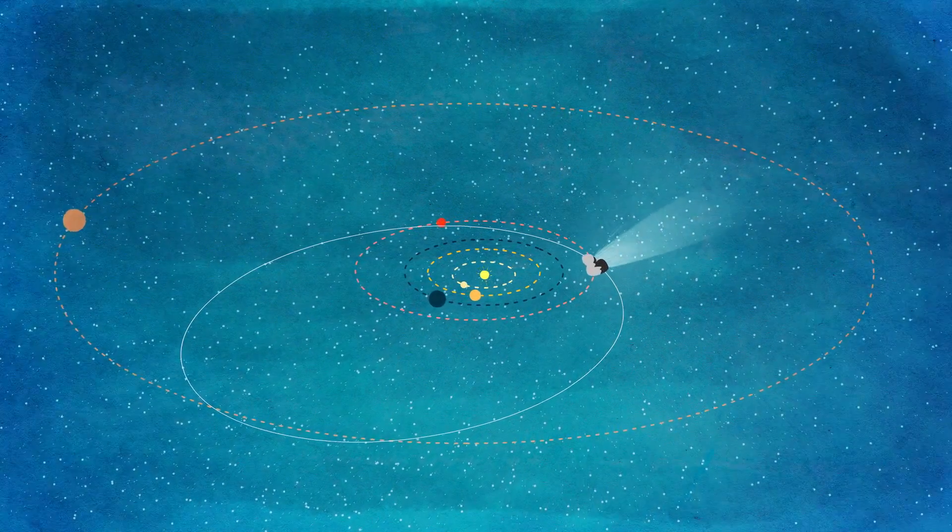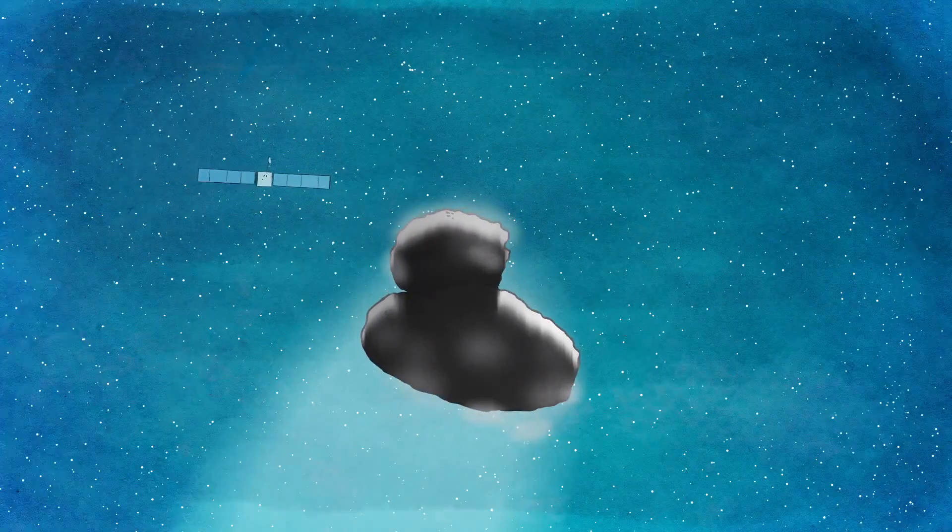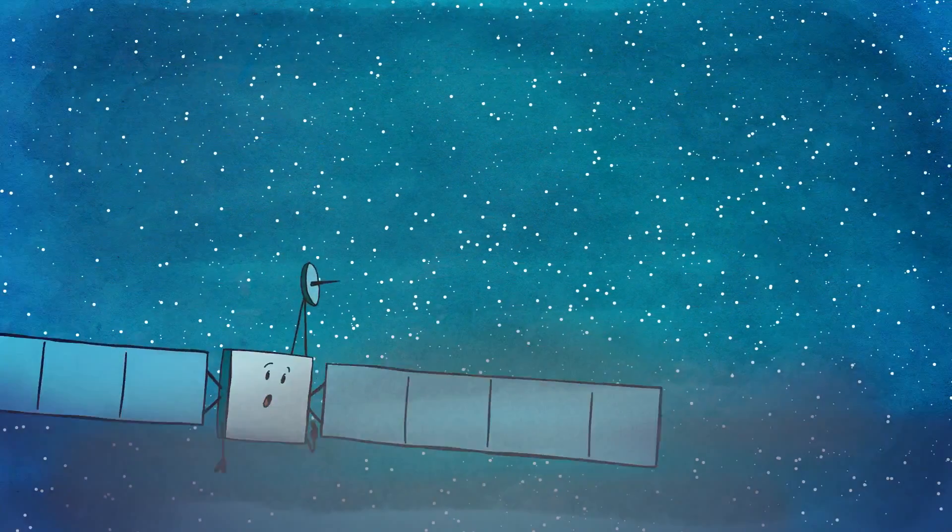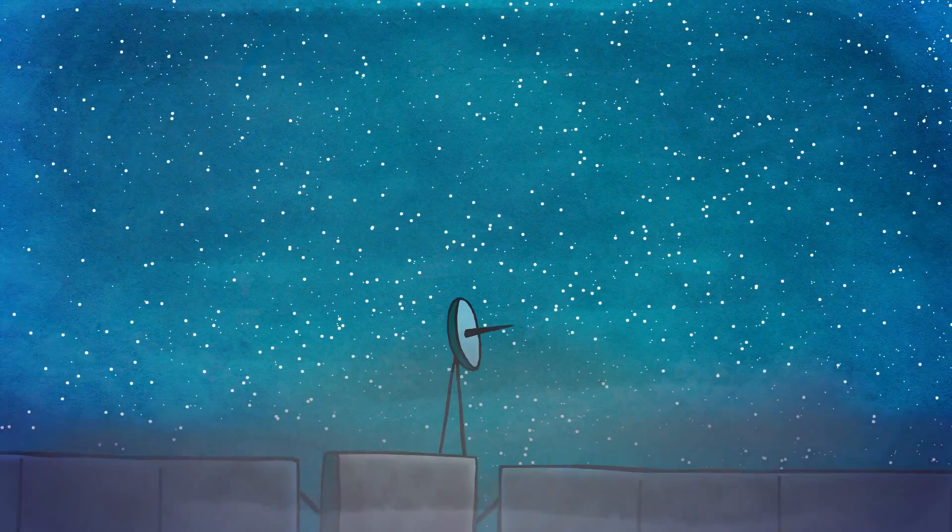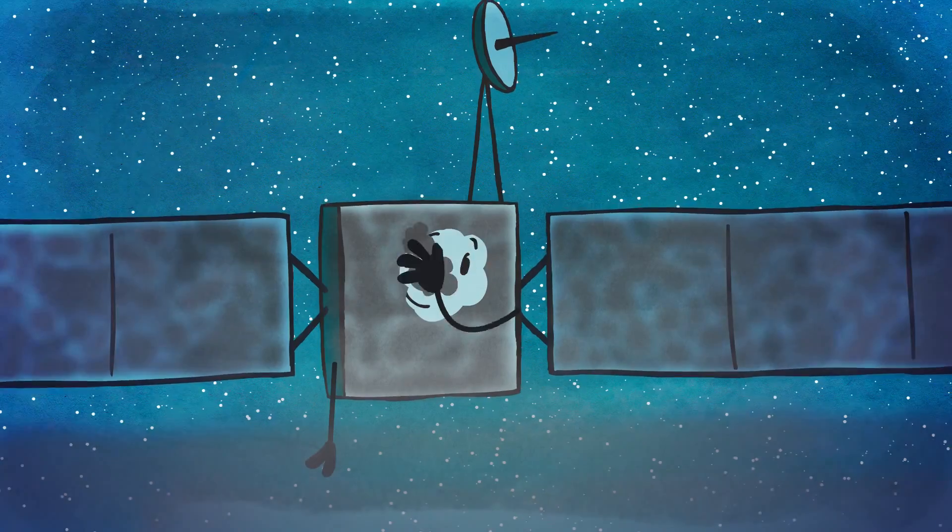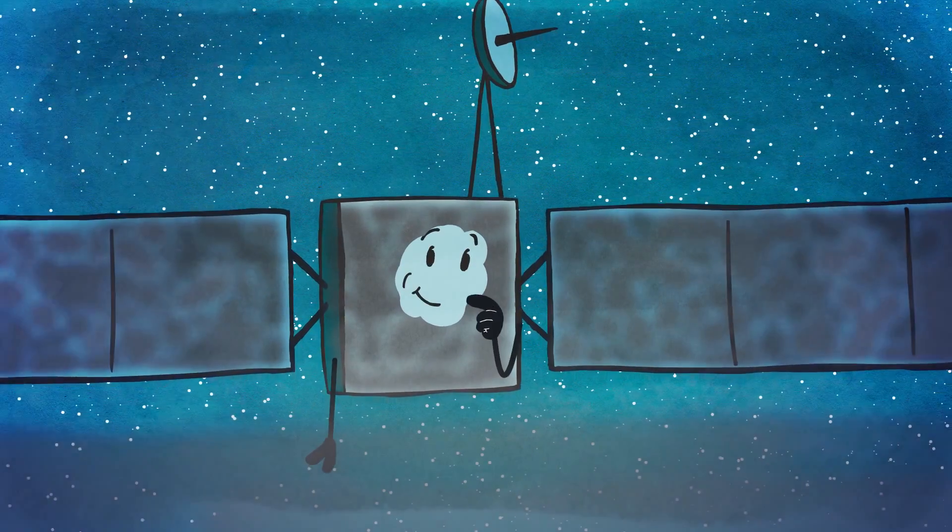As the comet got closer to the hot sun, Rosetta saw its activity increase. She collected samples of the gas and dust that streamed into space in order to learn more about what the comet was made of and where in the solar system it was born.